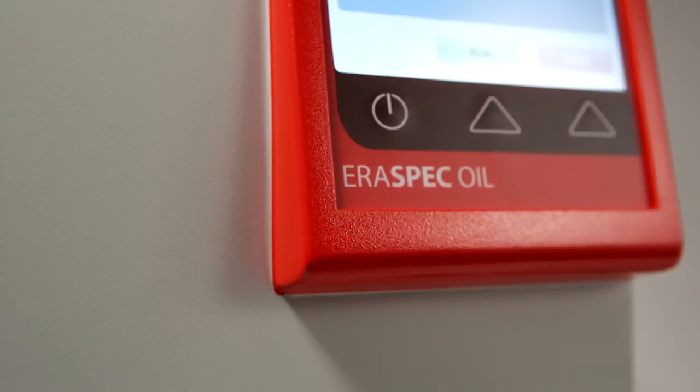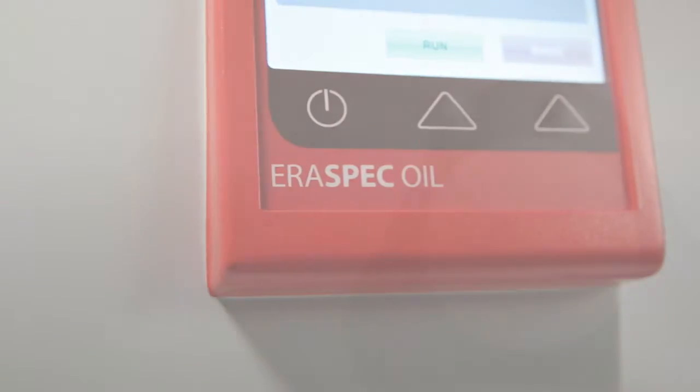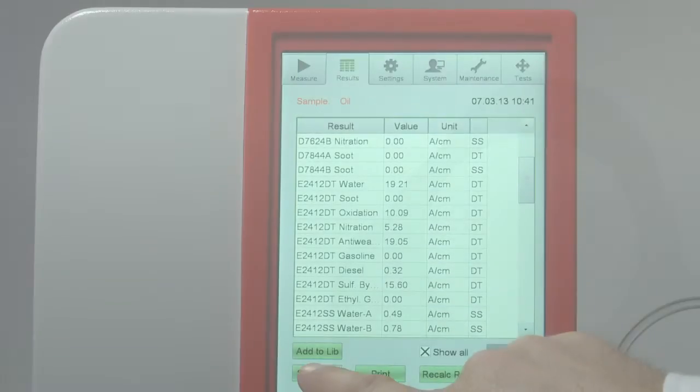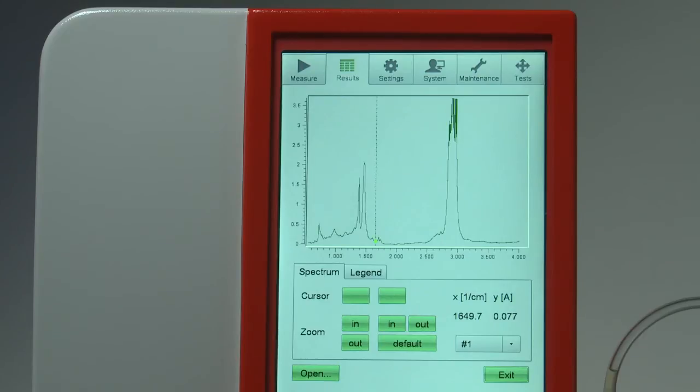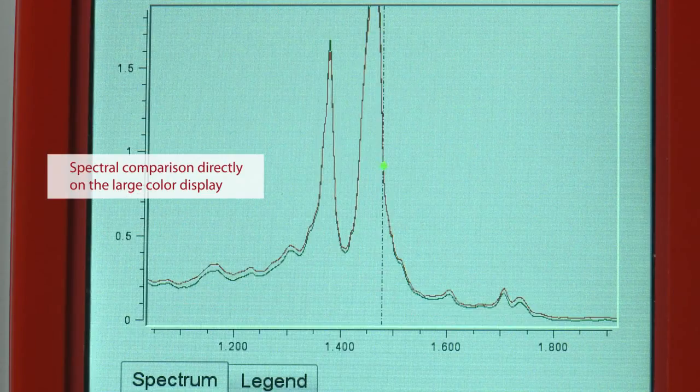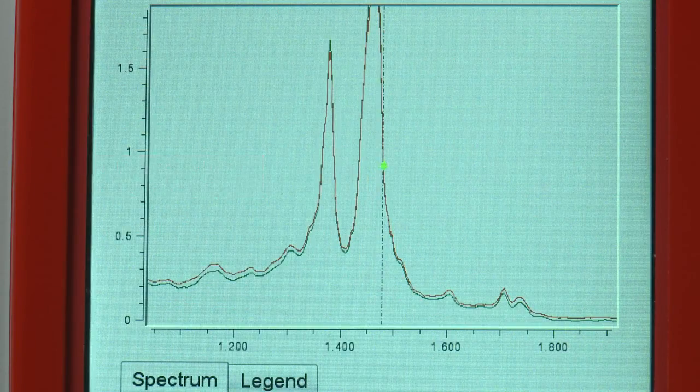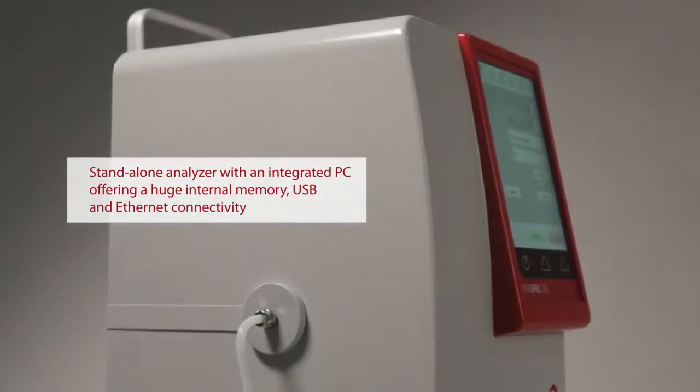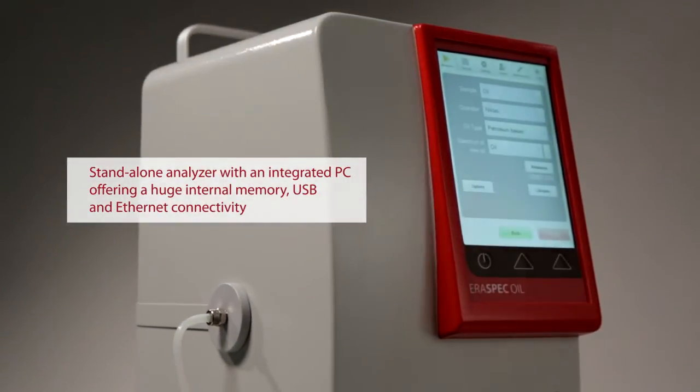For in-service oils, it determines the change in viscosity over time. All results are displayed on the large full-color touchscreen. Different oil spectra can be directly compared on screen, with internal memory holding several thousand measurements. There is no need for a computer in the field.